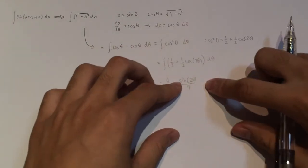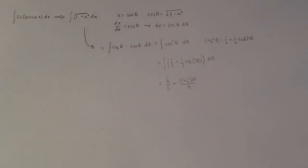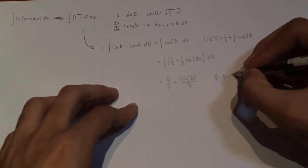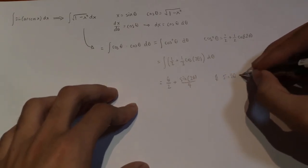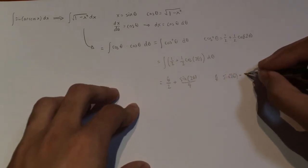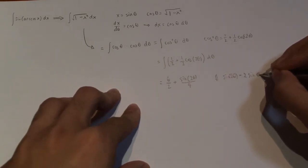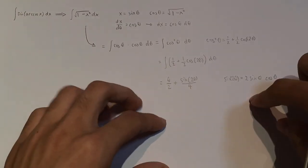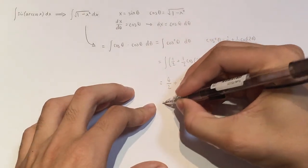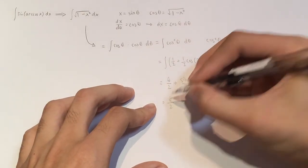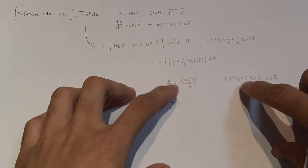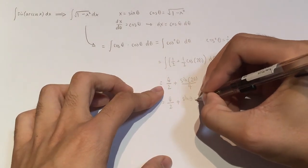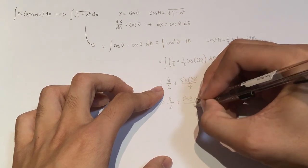Now, sine of 2 theta also has another identity that it equals to, right? So sine of 2 theta equals 2 sine theta cosine theta like that. And so now just putting this back into the identity again and you'll get the following. Theta over 2 plus the 2 here will cancel with the 4 and it will be left with that divided by 2. So it would be sine theta cosine theta divided by 2.